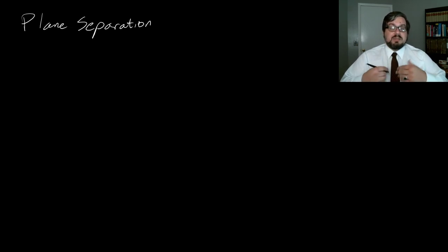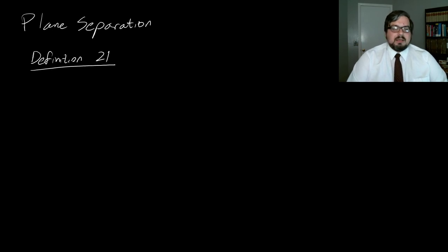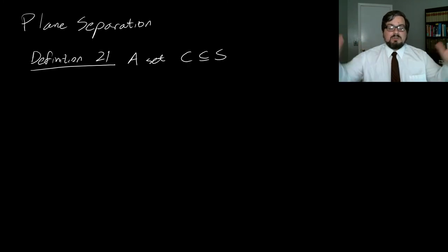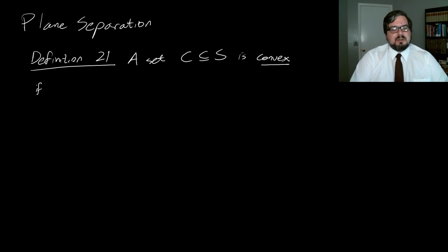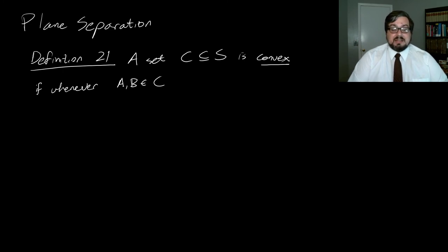To get into it, we need to start with a preliminary definition. Definition 21 says that a set C, which is a subset of S, our whole space, is called convex if whenever A and B belong to the set C, the segment AB is a subset of C.